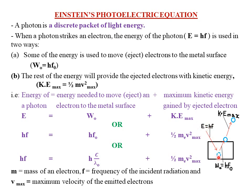When a photon strikes an electron, the energy of the photon — given by E = hf — is the energy of the incident radiation, which could be light or ultraviolet radiation, and it is used in two ways. One way is that some of the energy is used to move or eject electrons to the metal surface. Such energy is what we call the work function, denoted by W₀ = hf₀, where f₀ is the threshold frequency.